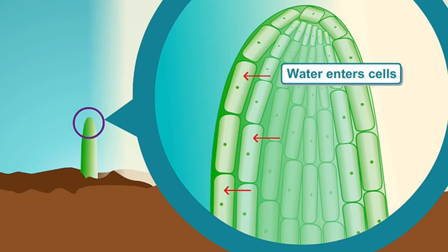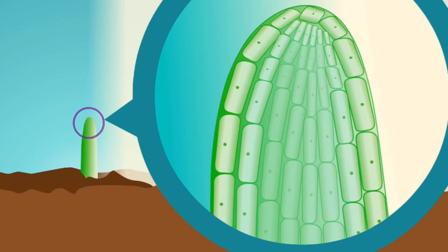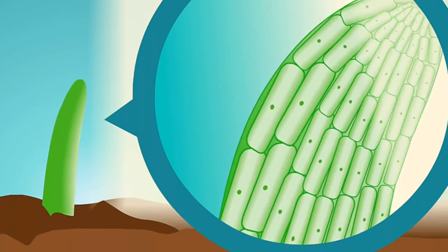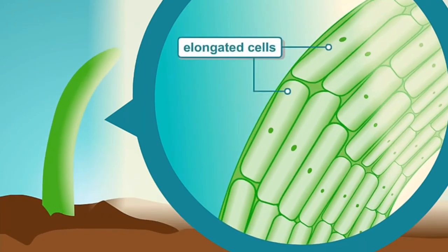The loosening of the cell wall allows water to enter the cell and turgor pressure increases. Cells on the shaded side become elongated and cause the shoot tips to bend towards the light.